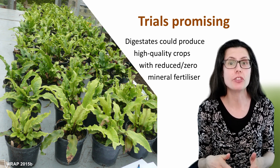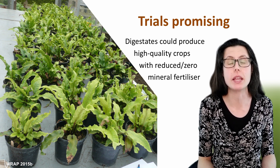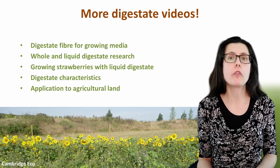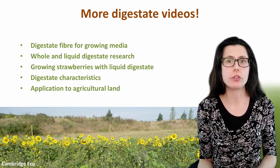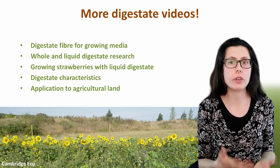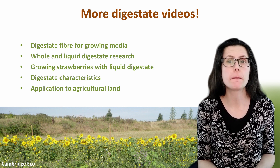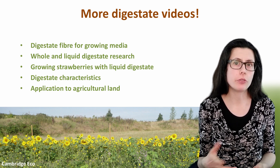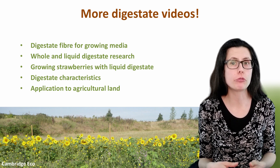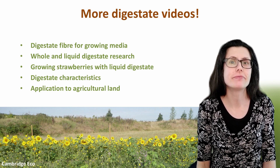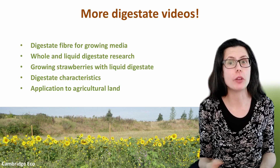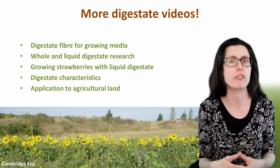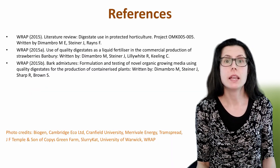This is good news, as reducing emissions to produce food more sustainably is what this channel is all about. Following on from this will be more videos on using digestates in horticulture, including one on the use of liquid digestates as fertiliser, one on solid digestate fibre for growing media, and a research trial growing strawberries with liquid digestates. Check out the channel for videos on digestate use in agriculture, which is part of the Reducing Ammonia Emissions series.